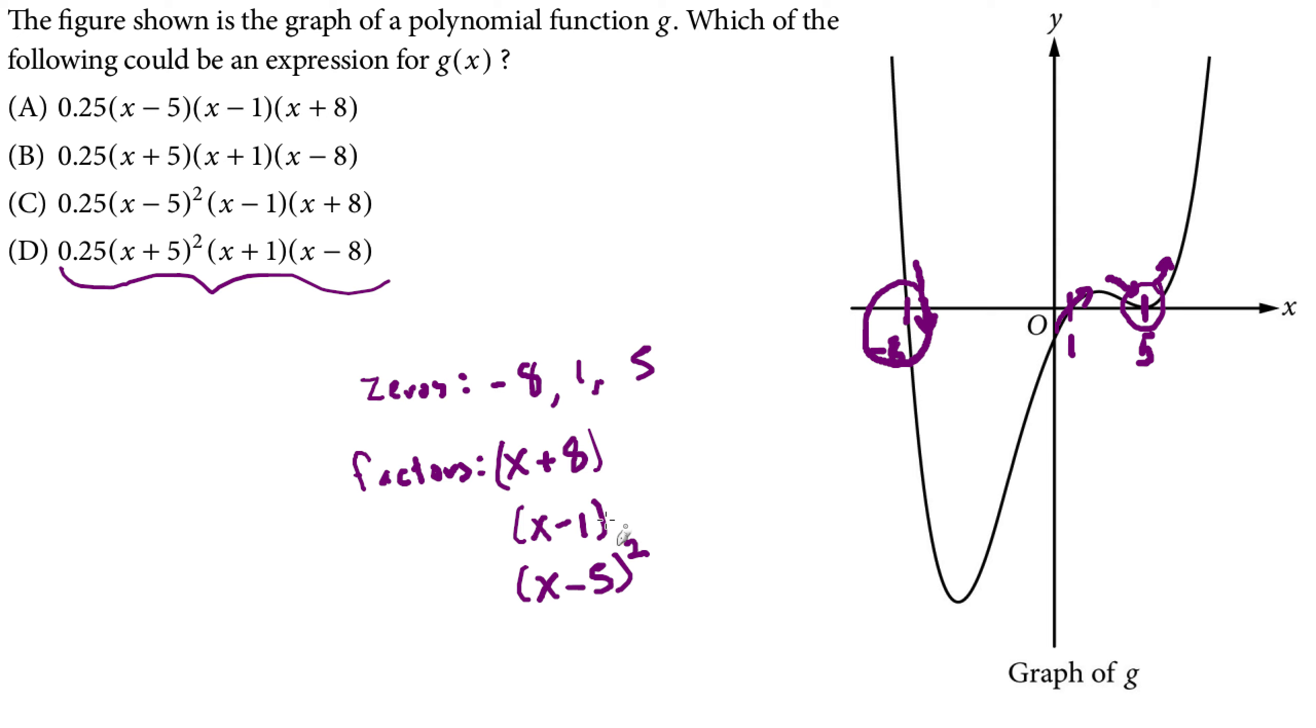And let's see if this is good enough to get there. So x minus 5 squared, x minus 1, x plus 8, my answer is C.